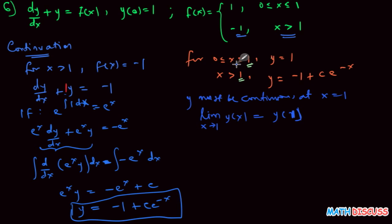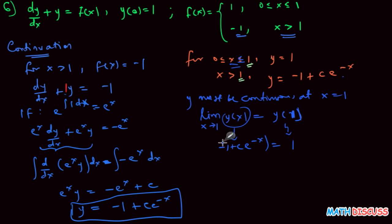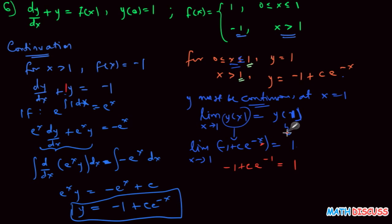Since x = 1 belongs to the first interval (0 ≤ x ≤ 1), y(1) = 1. For the second interval, y(x) = -1 + Ce^(-x). Applying the continuity condition, the limit as x tends to 1 gives: -1 + Ce^(-1) = 1. Solving for C: Ce^(-1) = 2, so C = 2e.